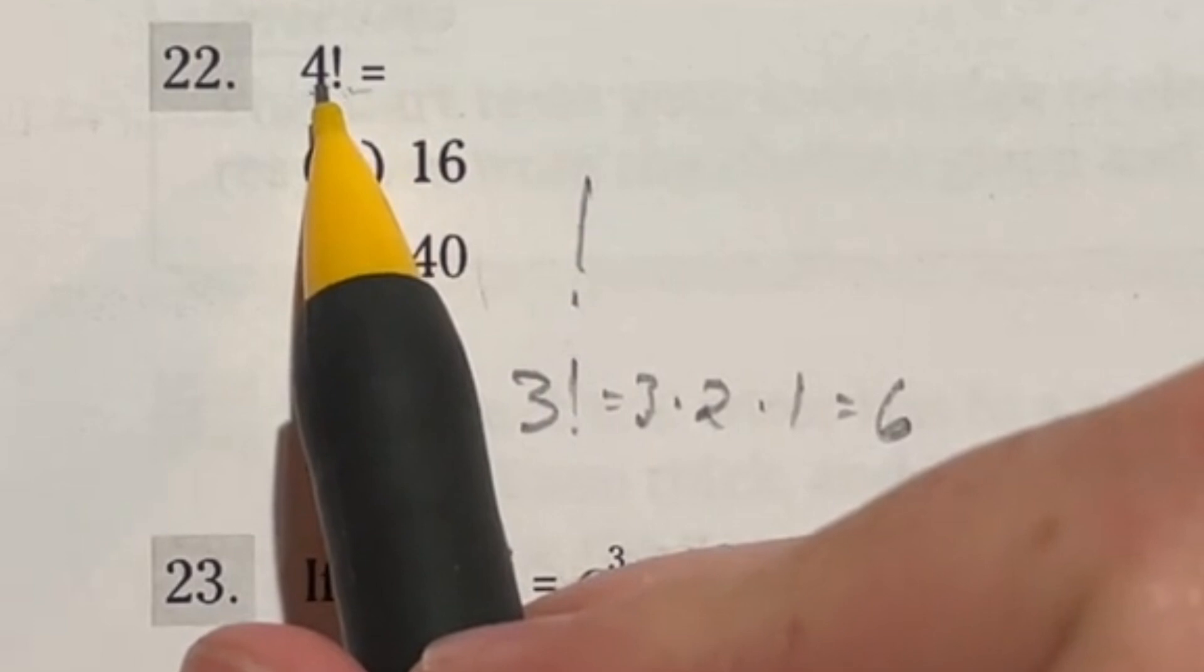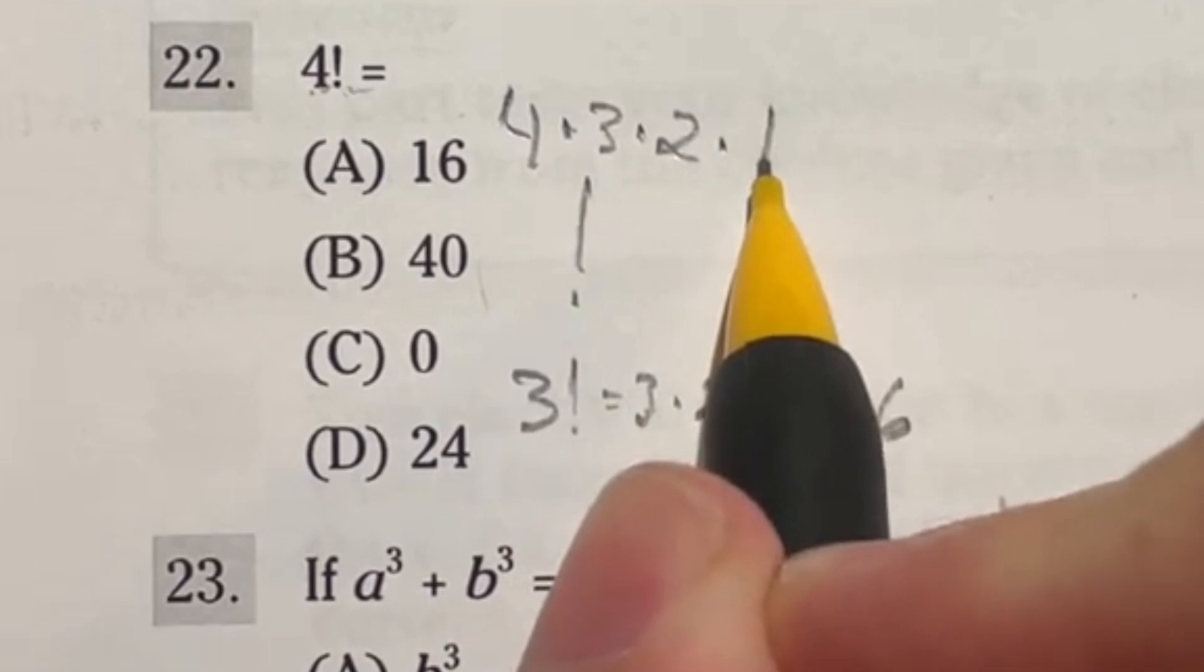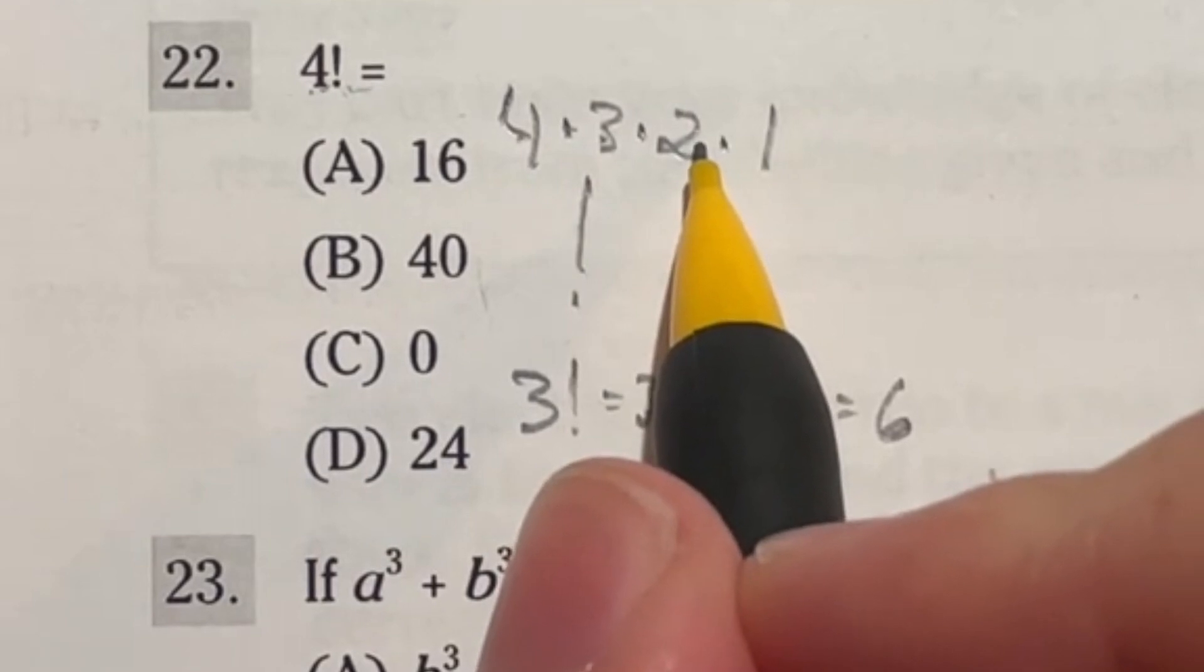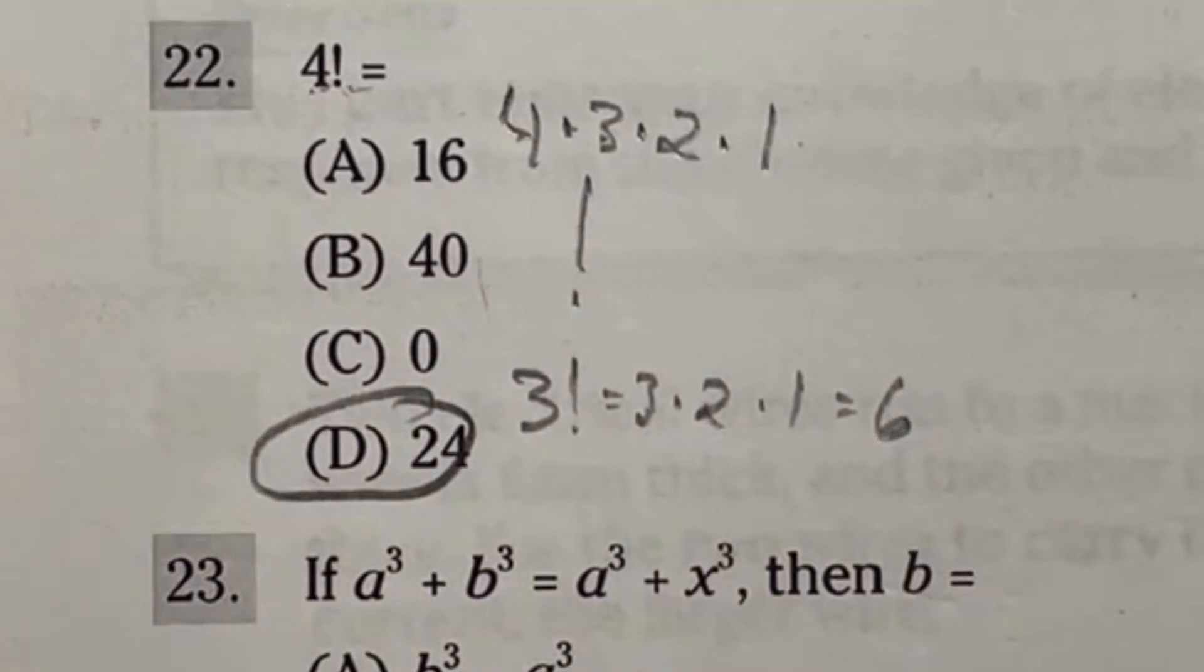So let's take a look at this one. Four factorial means that we're doing four times three times two times one. Four times three is going to give me 12 times another two is going to give me 24 times one is still 24. So our final answer is d, 24.